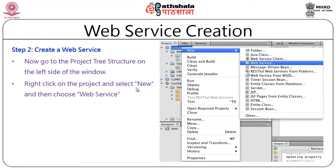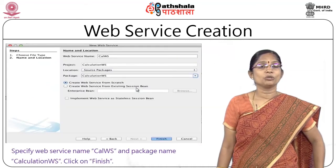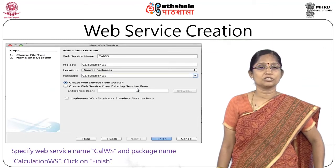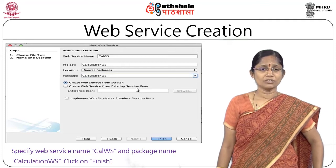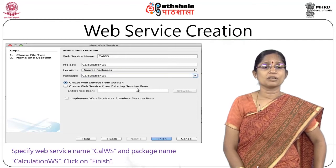Under this project, we need to create a new web service. In the project tree on the left side, right-click on CalculationWS, choose New, then select Web Service. Give the web service name as CILWS and the package name as CalculationWS, then click Finish. The web service has been created.